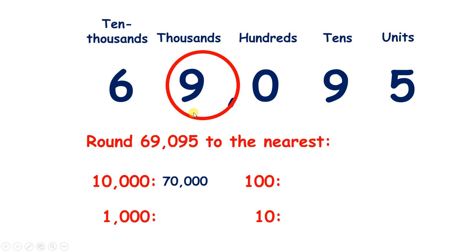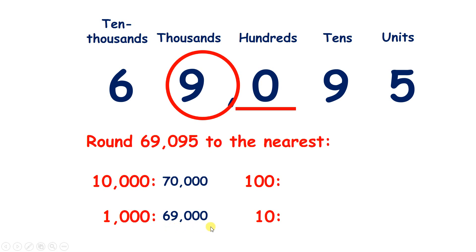Now rounding to the nearest 1,000, if we look next door we have a zero, so we leave that 9 as it is, put zeros to the right, and that gives us 69,000.